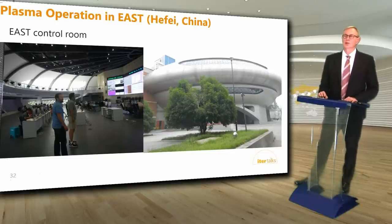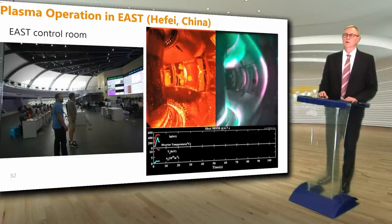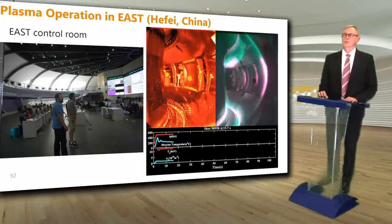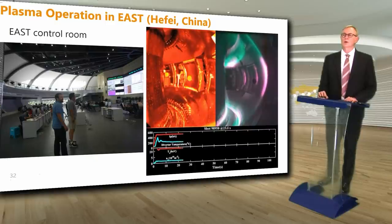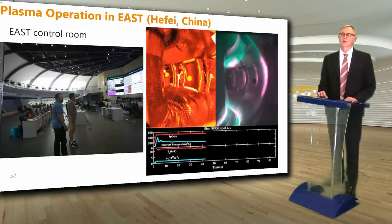This shows plasma operation on the EAST tokamak in Hefei, China, showing the outside and inside of the control room. This video shows a greater than 100-second-long plasma pulse with an infrared image on the left and a visible image on the right. The plasma temperature reaches about 10 kilo-electron-volts — more than 100 million degrees centigrade — while the diverter temperature is maintained at around 200 degrees C through water cooling and diverter heat flux control using lithium powder that radiates green in the colder edge regions of the plasma.